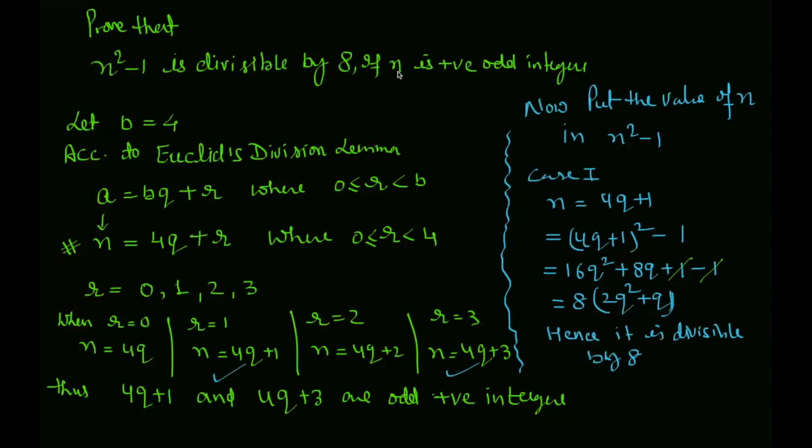Now, if you look at the question, n is a positive odd integer. Odd integers ko lena hai. n kya hona chahiye? Odd integers hona chahiye. Even ko hum nahi lenge.